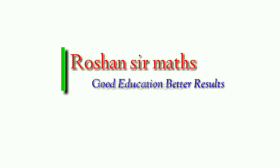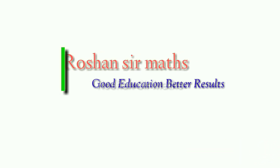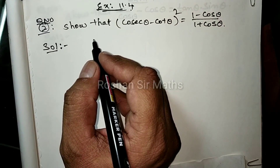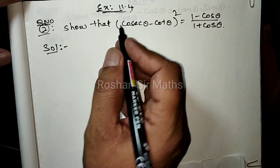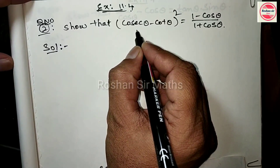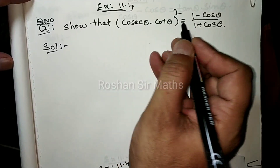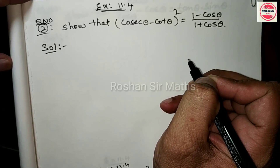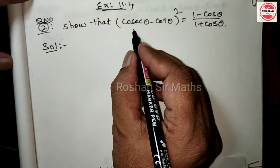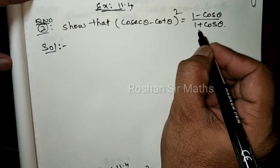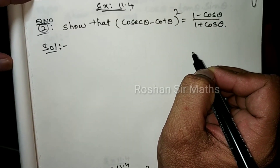Hello students, welcome to my channel. This is Roshan Sir Max. Exercise 11.4: Show that (cosec theta minus cot theta) whole square is equal to (1 minus cos theta) by (1 plus cos theta). So we need to prove cosec squared theta minus cot squared theta equals (1 minus cos theta) by (1 plus cos theta).